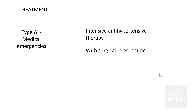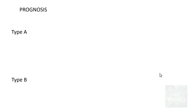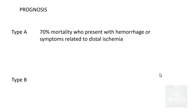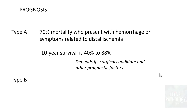Type A aortic dissections are medical emergencies requiring utmost care, intensive antihypertensive therapy, and most often surgical intervention. Type B dissections can be managed conservatively with long-term antihypertensive treatment. Regarding prognosis, type A has bad prognosis with 70% mortality in those presenting with hemorrhage or distal ischemia due to obstruction. The 10-year survival rate ranges from 40 to 88% depending on surgical candidacy and other prognostic parameters. Type B is relatively less complicated, with around 75% survival rate.